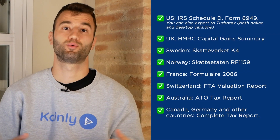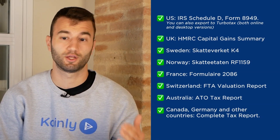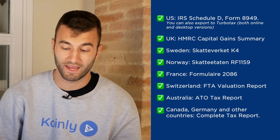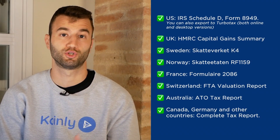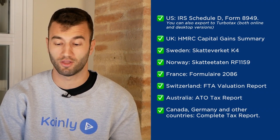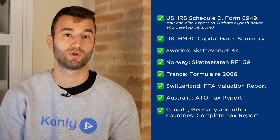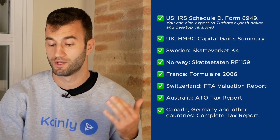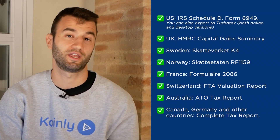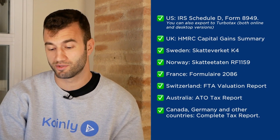We have plenty of different reports. For the US we have the IRS Schedule D form 8949, and you can also export to TurboTax in both online and desktop versions. We have reports for the UK, Sweden, Norway, France, Switzerland, Australia, Canada, Germany, and other countries.